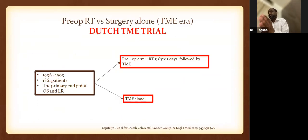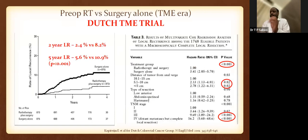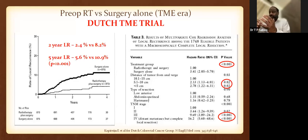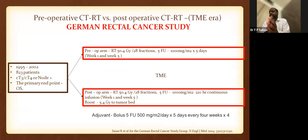The Dutch TME trial — the most spoken-about trial with ~1800 patients — had OS and local control as primary endpoints. It compared pre-op short course RT (5×5 Gy) followed by TME versus TME alone. Results: fewer local recurrences with RT, better 5-year local control, and greater benefit for mid/lower rectum and stage 3–4 patients. However, there was no difference in OS even on prolonged follow-up — except for the Swedish trial, none have shown this. Europeans accepted short course RT; Americans preferred long course.